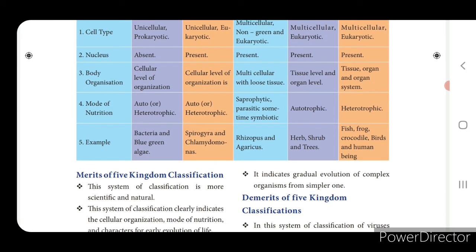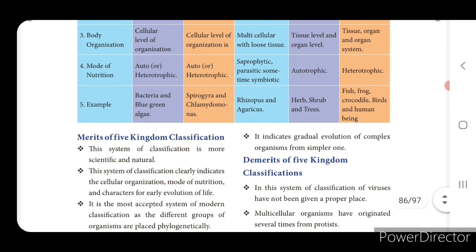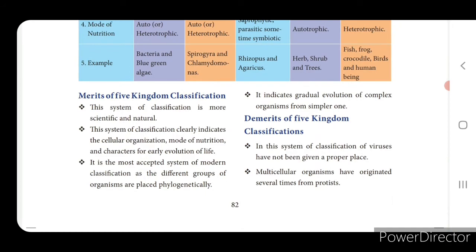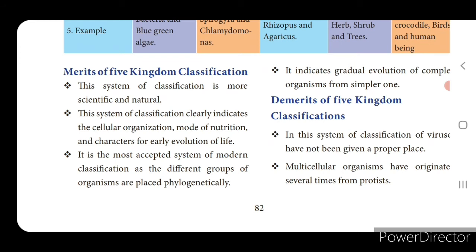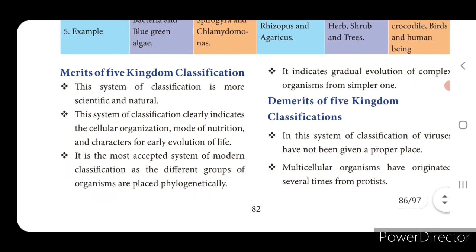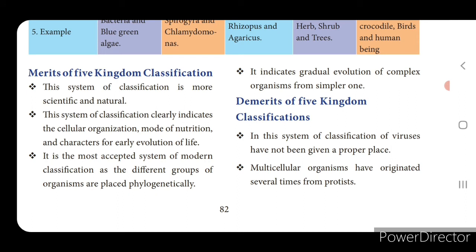When anything is discovered, there may be merits and demerits. Merits of five kingdom classification: the system is more scientific and natural; it clearly indicates the cellular organization, mode of nutrition and characters for early evolution of life; it is the most accepted system of modern classification as different groups of organisms are placed phylogenetically; it indicates gradual evolution of complex organisms from simpler ones.